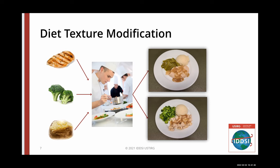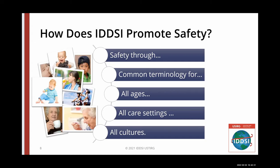For example, while we can all agree that the top photo on the right represents puree texture, the bottom photo may be classified differently depending on the facility — is it ground, diced, chopped? The inconsistent terminology is a worldwide issue surrounding dysphagia diets. Inconsistent and confusing terminology can result in the patient receiving food and liquid textures that may compromise chewing and swallowing safety and efficiency. The primary objective of IDDSI is to promote safety through common terminology for all ages, in all care settings, and for all cultures.